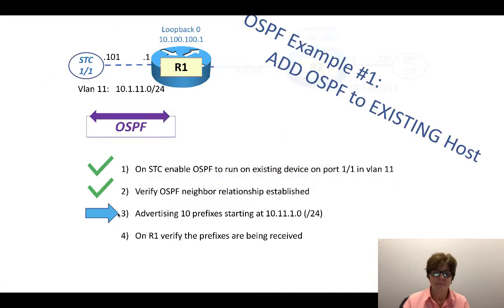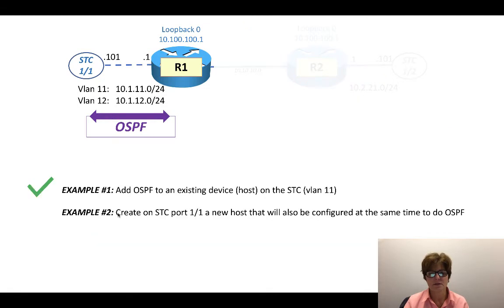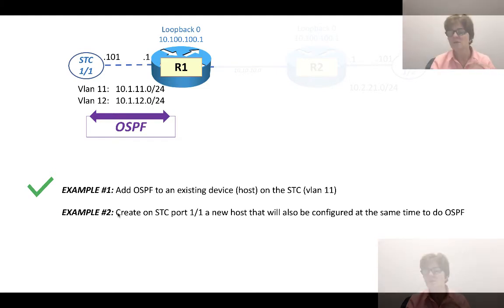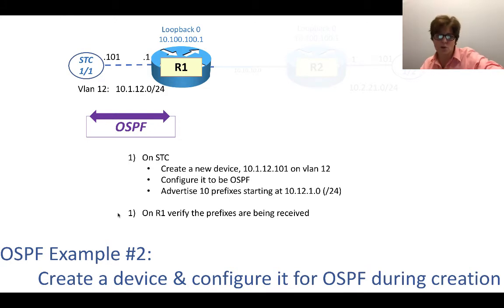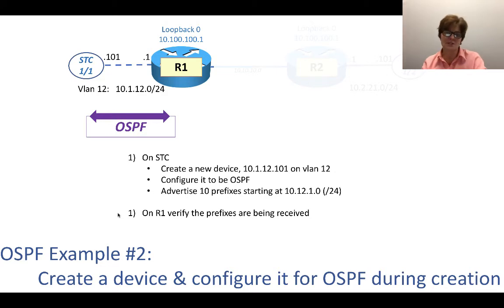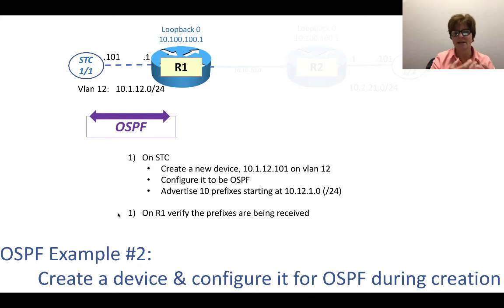The other example is to create something brand new. We're going to go to the Spirent Test Center and create a new device on VLAN 12. While configuring that new device, we'll configure it to do OSPF, and while configuring OSPF we'll also go ahead and generate LSAs. Let's do that.